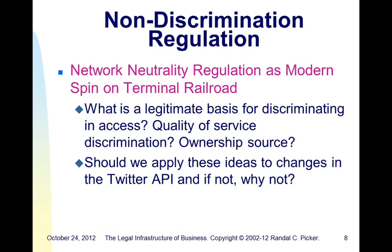We've also seen, and are in the midst of, an era of non-discrimination regulation. The kinds of issues we saw in Terminal Railroad are playing out again today. We had a discussion about network neutrality and a hypothetical of Comcast blocking Netflix. What the rules contemplate is that it may be perfectly sensible to have quality-of-service discrimination — email getting a different quality of service than video — but not allowing discrimination based upon ownership or source. We also discussed to what extent those ideas should apply to something like Twitter and the Twitter API, where Twitter had a very open API and has slowly closed it over time in ways that firms that built businesses on the API find unreasonable.